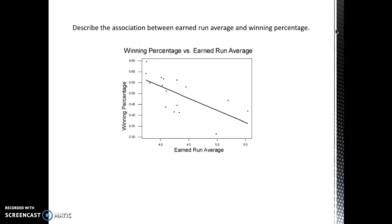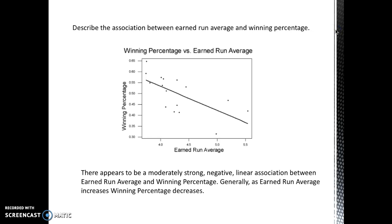Now it's your turn. Pause this video and describe the association between earned run average and winning percentage. You should have mentioned that there appears to be a moderately strong, negative, linear association between earned run average and winning percentages. Your supporting statement should read something like: 'Generally, as earned run average increases, winning percentage decreases.'